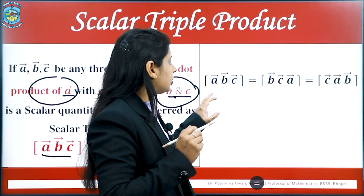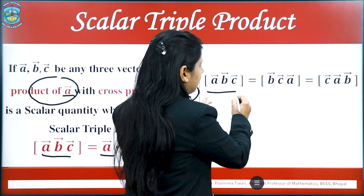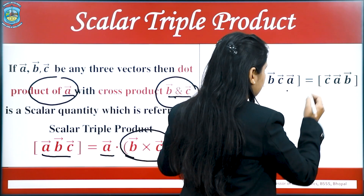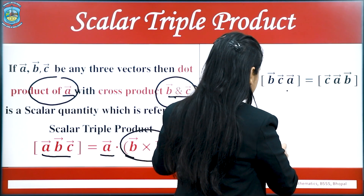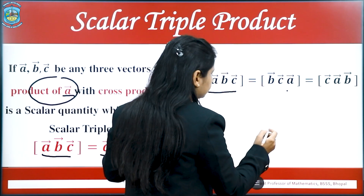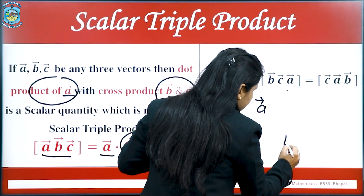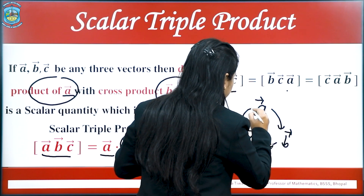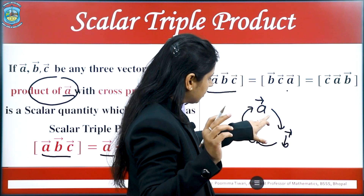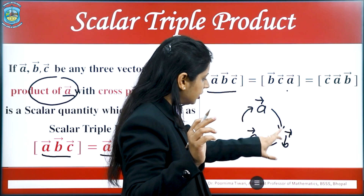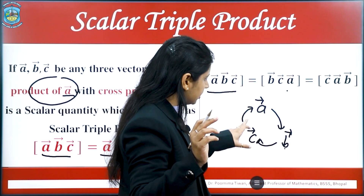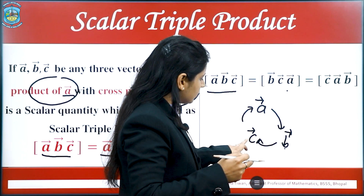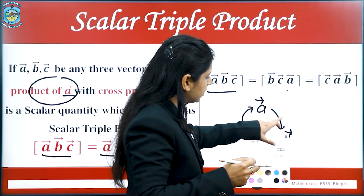For a scalar triple product, we find that the scalar triple product of A, B, C equals the scalar triple product of B, C, A, which equals the scalar triple product of C, A, B. If we take the scalar triple product and move the vectors in a clockwise direction — A, B, C, A — it equals the scalar triple product of C, A, and B.